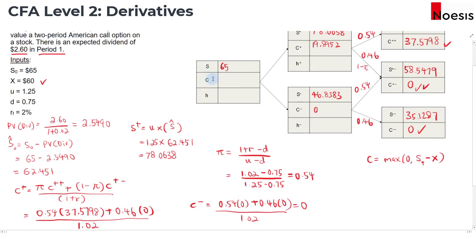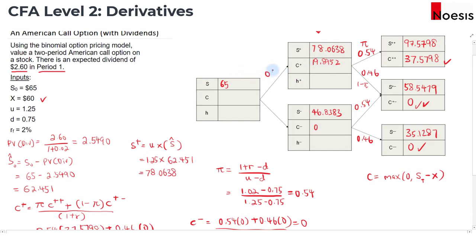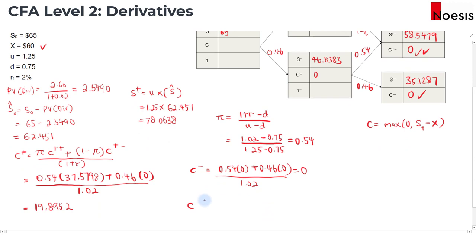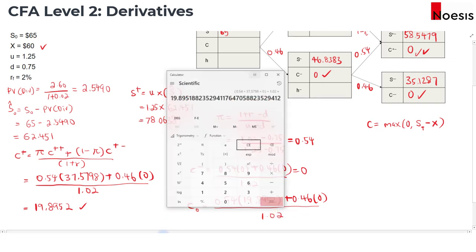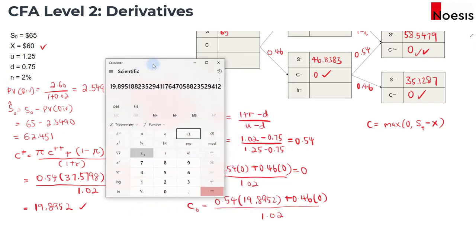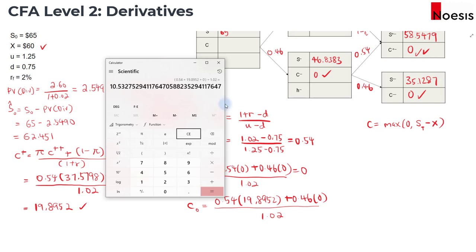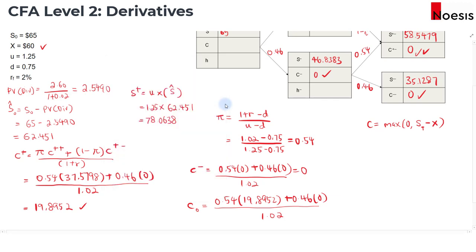To get the call option value at period 0, we use the risk-neutral probability again: 0.54 multiplied by 19.8952 plus 0.46 times 0, divided by 1.02, which gives us 10.5328. So that's the call option value of 10.5328, assuming no early exercise. This would be similar to the value of a two-period European call option.